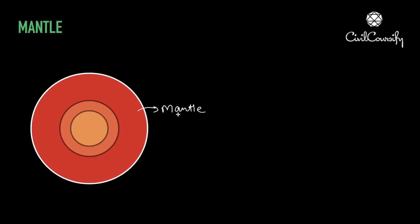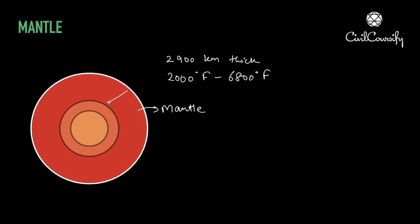Now let us look at the mantle. The mantle is nothing but molten magma. It is 2900 kilometers thick, and its temperature varies between 2000 degrees Fahrenheit to 6800 degrees Fahrenheit. This temperature increases inward — as we go from the surface towards the center of the earth, the temperature increases. This mantle area is also called the mesosphere. So now we know the layers starting from the atmosphere, lithosphere, hydrosphere, and then moving inwards towards the mesosphere.